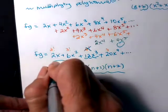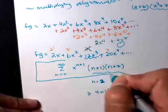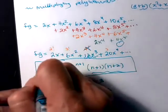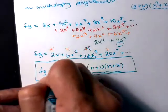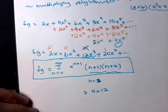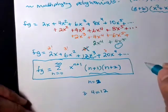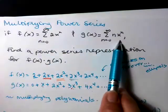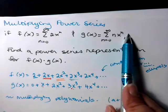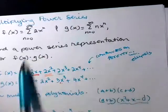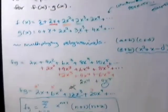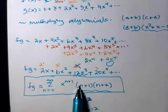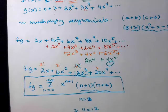So here is what we get if we multiply f times g. f was 2x^n, g was nx^n. If we multiply those together, we get (n+1)(n+2) as the coefficient, and then x^(n+1) is our power of x.